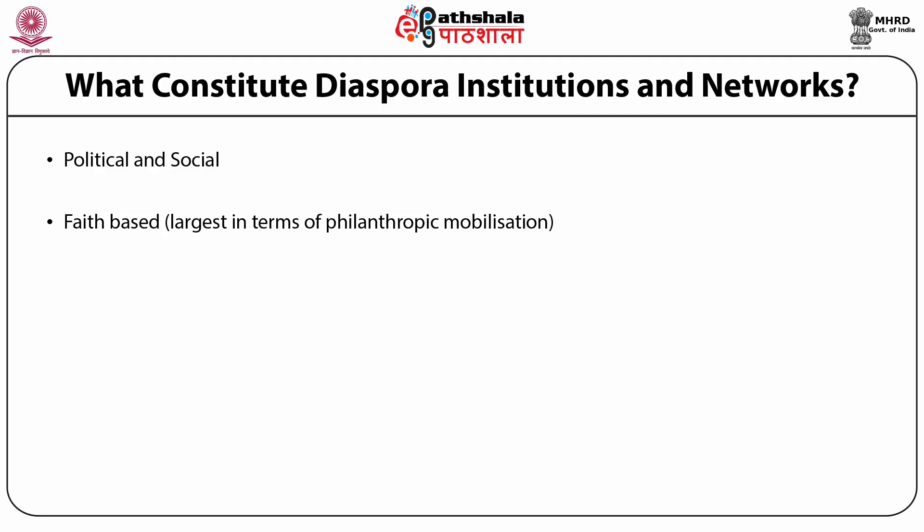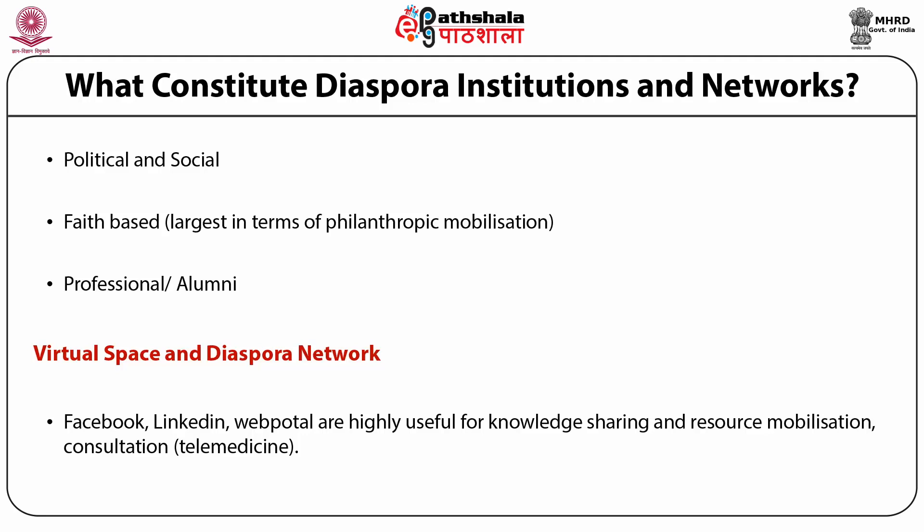The third type is professional and alumni networks, which are more directly involved in developmental participation. For example, doctors in the USA have their own network called API. Alumni networks of IITs, IIMs, and many other Indian universities also exist abroad and play a big role in institution building, education, and philanthropy back home. In addition, there are virtual diasporic networks — diaspora networks on Facebook, LinkedIn, and web portals serve as platforms to mobilize resources, facilitate consultation, and share ideas, complementing other networks.